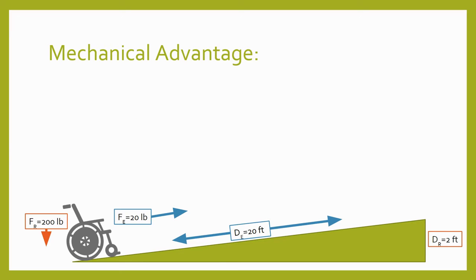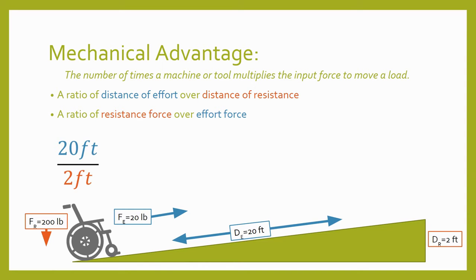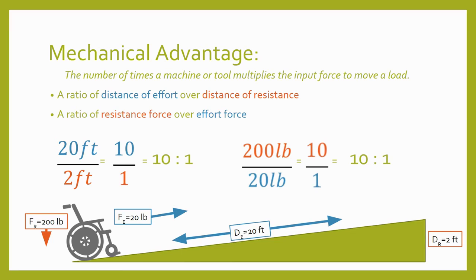Mechanical advantage could be defined as the number of times a machine or tool multiplies the input force to move a load. It's expressed as a ratio — either the ratio of the effort distance to the resistance distance, or the ratio of the resistance force to the effort force. On paper the two expressions are identical. For our wheelchair ramp, this means a mechanical advantage of 10 to 1: our effort force is multiplied 10 times to overcome the resistance force.